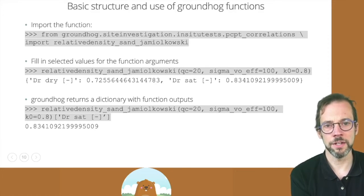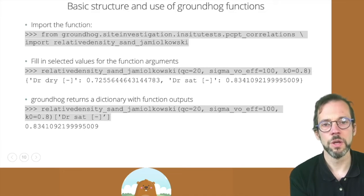And to access a single value from that dictionary, we can simply include the key within square brackets, and then we simply get the relative density for saturated conditions, which is 83% in this case.